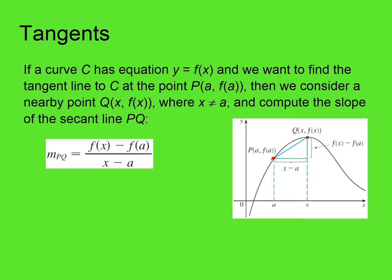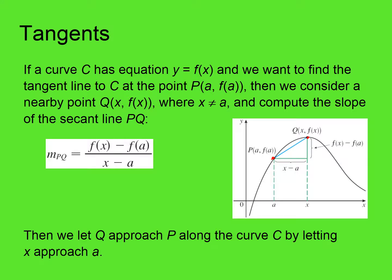We use the slope formula: m = (y₂ - y₁) / (x₂ - x₁). So the expression for the slope of the secant line — the line that passes through two points on the curve — is: [f(x) - f(a)] / (x - a).